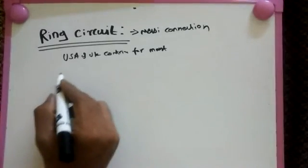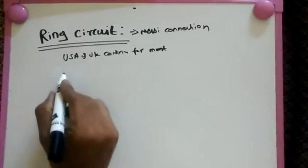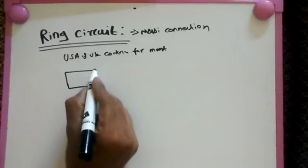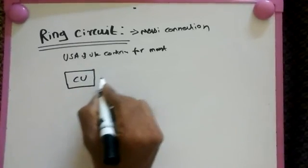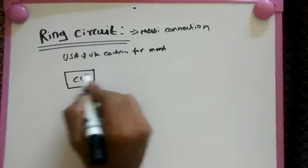First thing, how is the wiring made at the time of ring circuit? This is the consumer unit. In this case, we take four flag points for wiring.